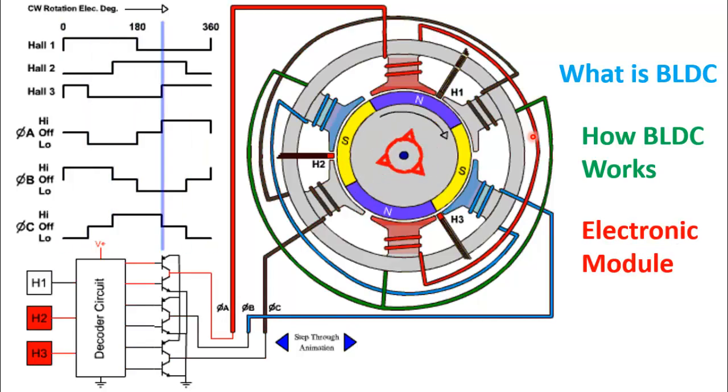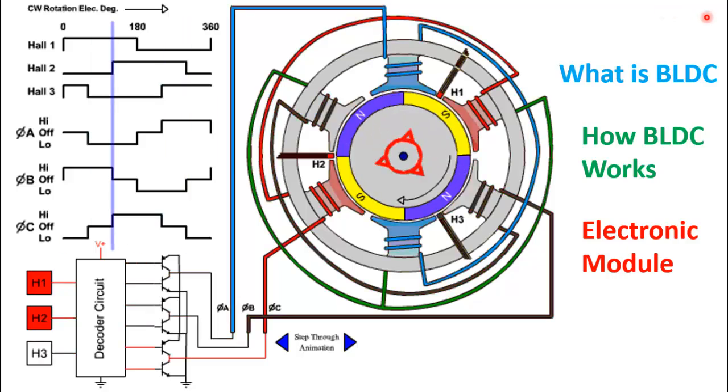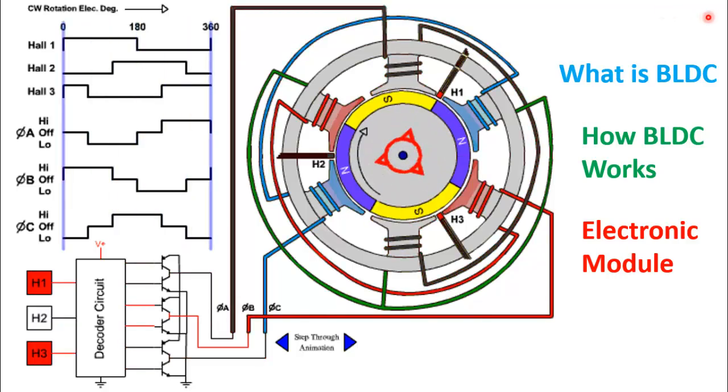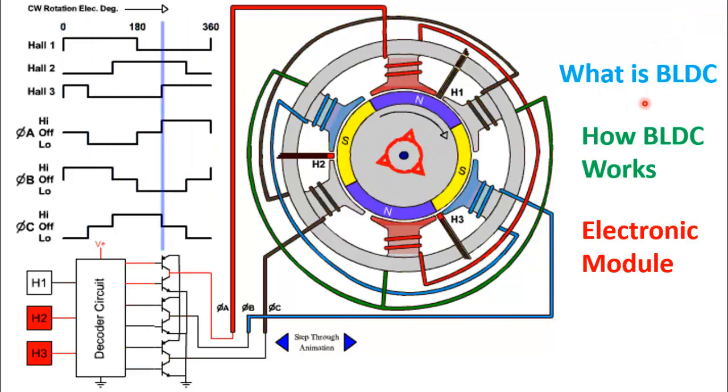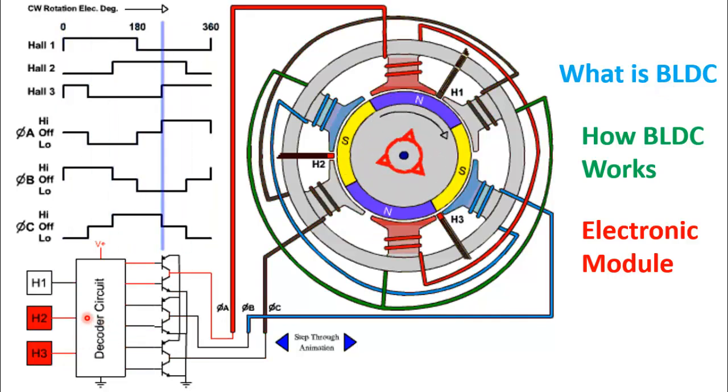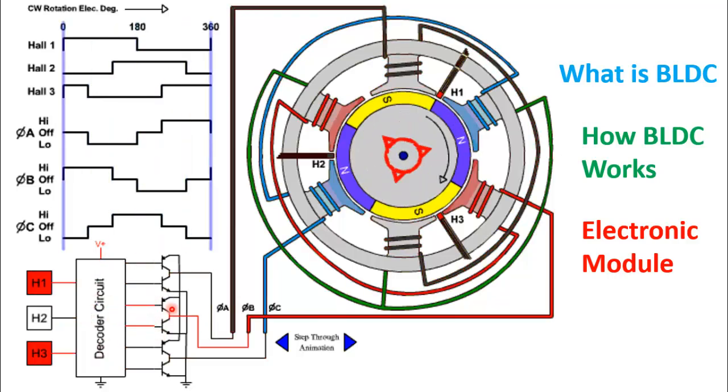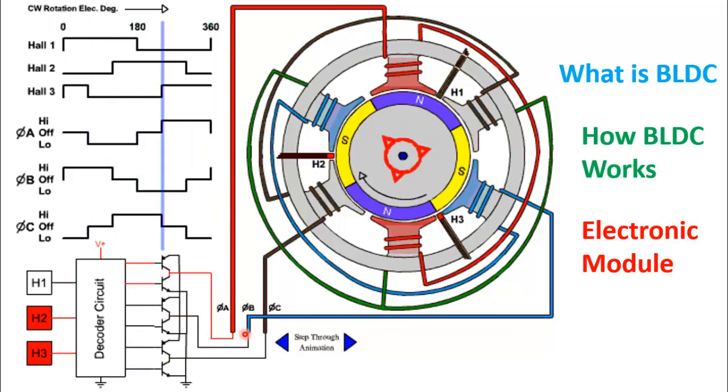We'll also study the function of the electronic module used for the commutation or speed control of this electric motor. First of all, a brushless DC electric motor is an electric motor powered by direct current voltage supply and commutated electronically instead of by brushes like in conventional DC motors.